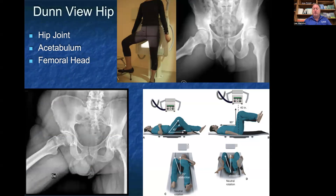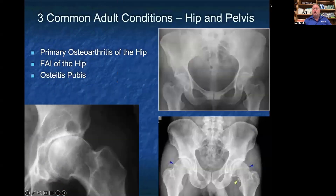Here's the positioning for the Dunn view. You can easily see the femoral acetabular joint from this view. The three common adult conditions that we see the most for hip and pelvis pathology on x-ray are primary osteoarthritis of the hip joint, which you can see best in the bottom left view, FAI of the hip — femoral acetabular impingement — which you can see in the bottom right, and osteitis pubis, which you can see in the top right image.